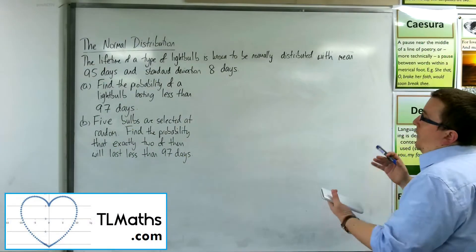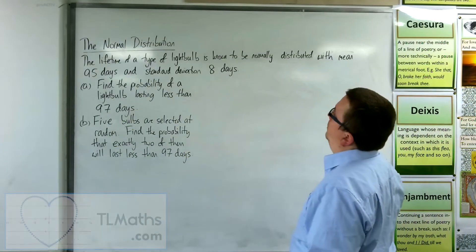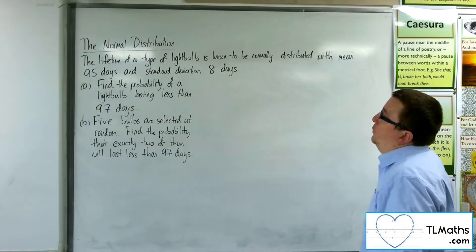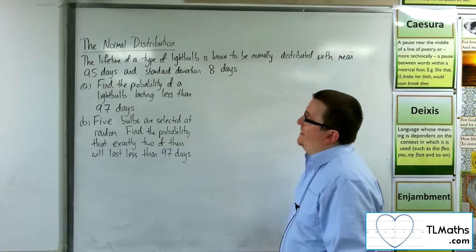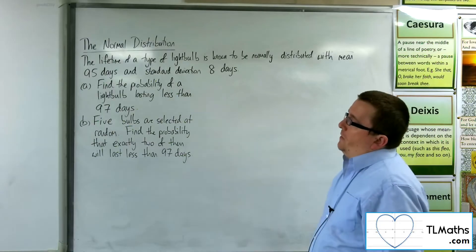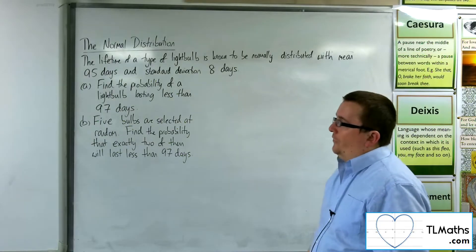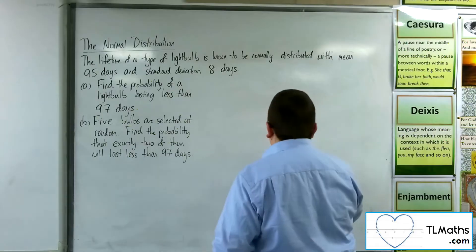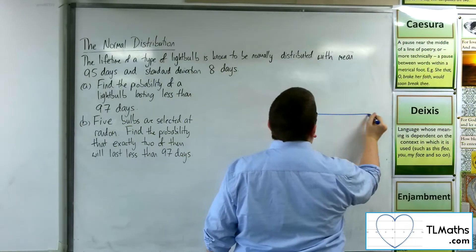In this video we're saying the lifetime of a type of light bulb is going to be normally distributed with a mean 95 days and standard deviation of 8 days. First question is, find the probability of a light bulb lasting less than 97 days. So let's draw a diagram and see what's going on.